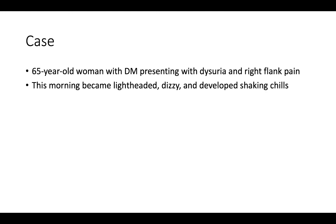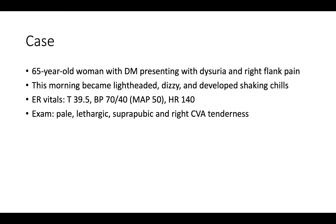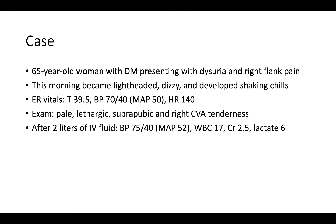The patient is a 65-year-old woman with diabetes presenting with a three-day history of dysuria and right flank pain. This morning she became lightheaded, dizzy, and developed shaking chills. In the ER, she is febrile to 39.5, hypotensive to 70 over 40, and tachycardic to 140. On exam, she is pale, lethargic, and has suprapubic and right-sided CVA tenderness. After approximately 2 liters of IV fluid, her blood pressure remains 75 over 40.